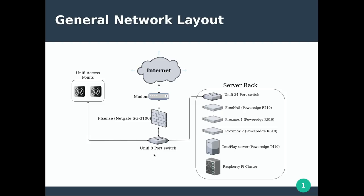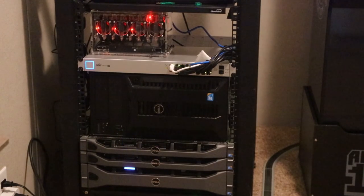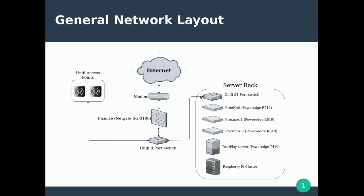Moving on from there, I have several UniFi devices. I have a UniFi 8 port switch — that is what my PFSense device connects into. Coming off this switch there are two ethernet cables each going to one UniFi access point, and these access points are at different places in my house so wherever I am I have very good coverage. Then there's also a cable going to yet another UniFi switch — this is the server rack right here. This UniFi 24 port switch is on that rack, and everything below is connected to this switch.